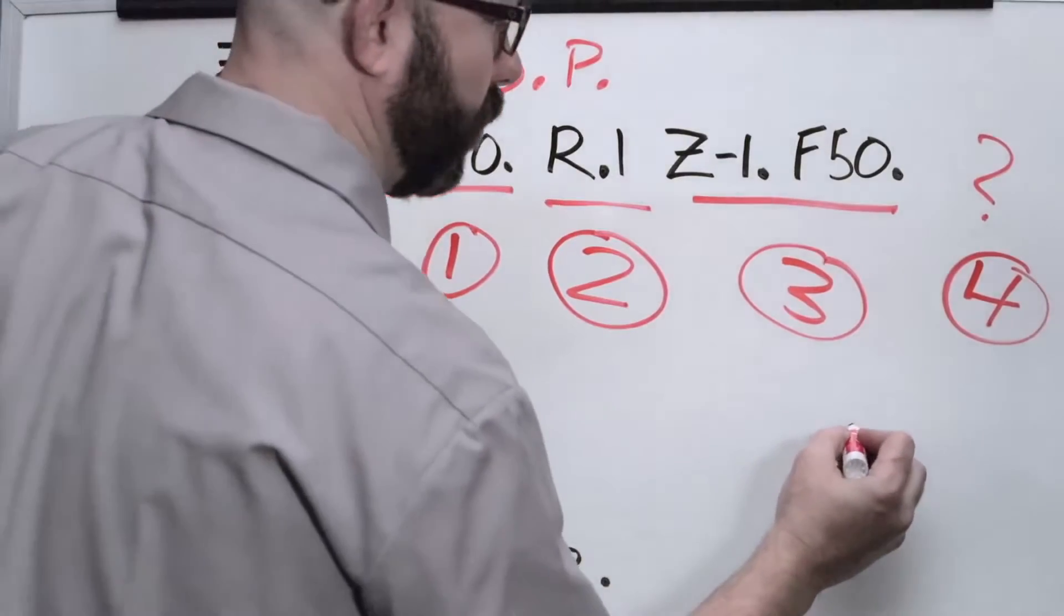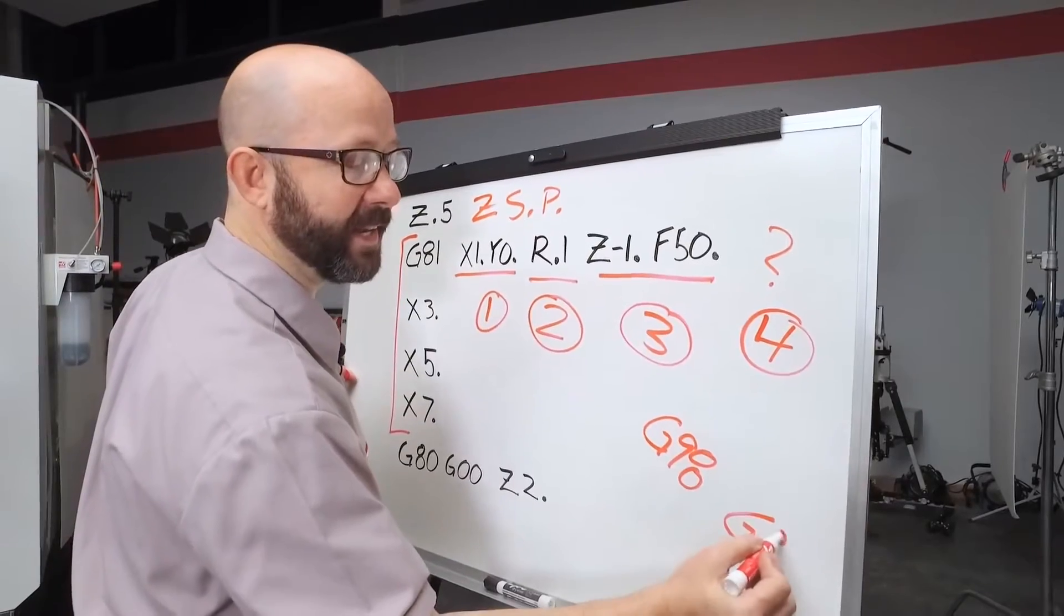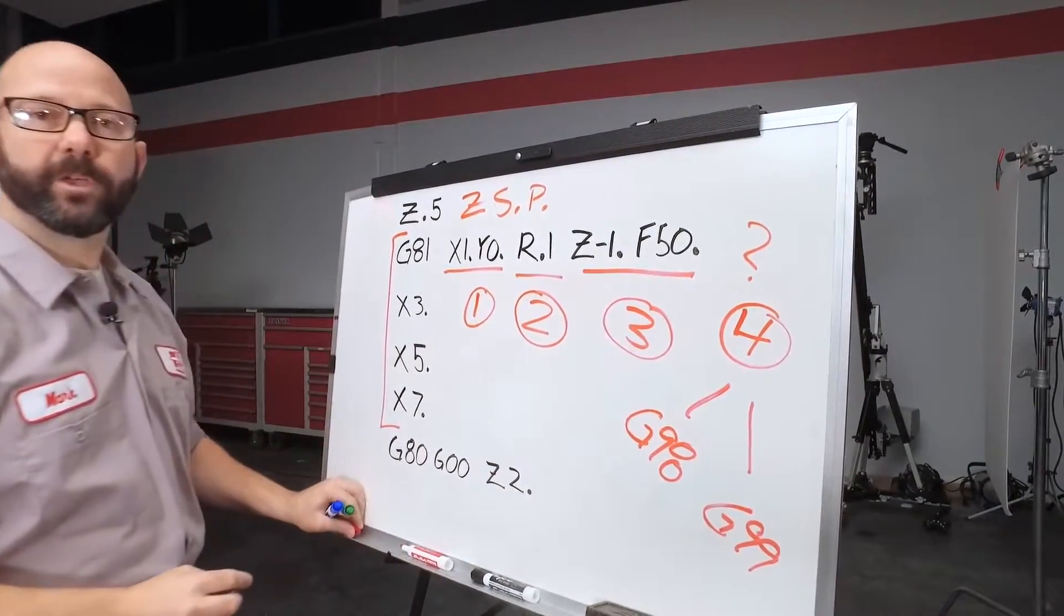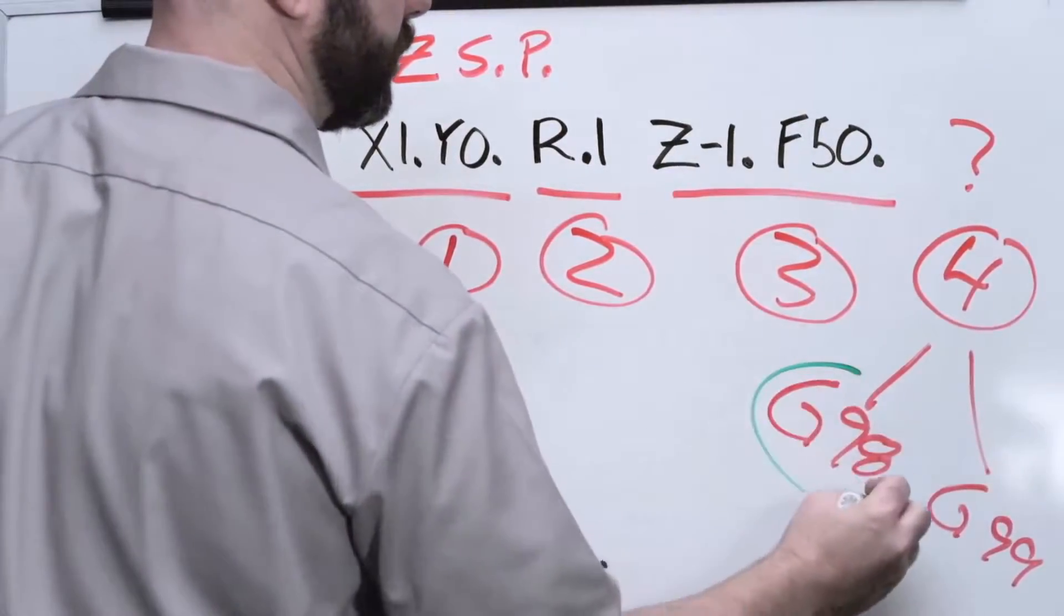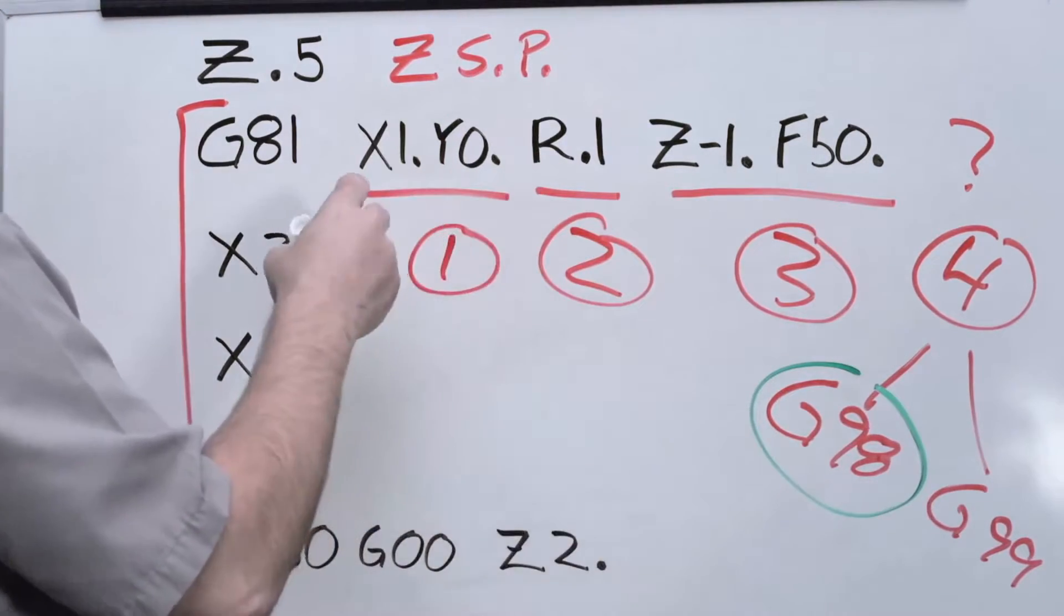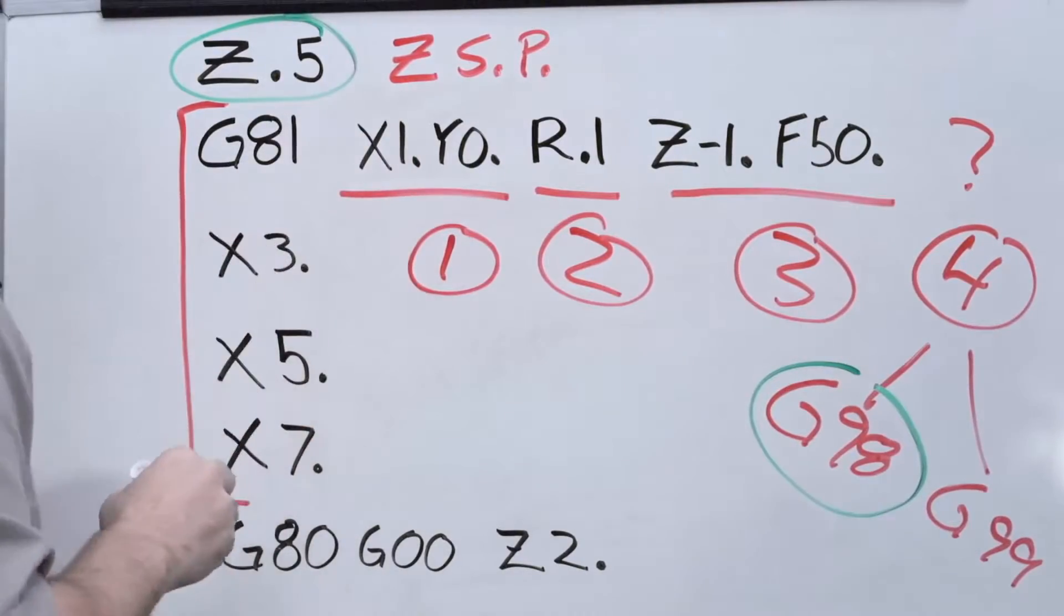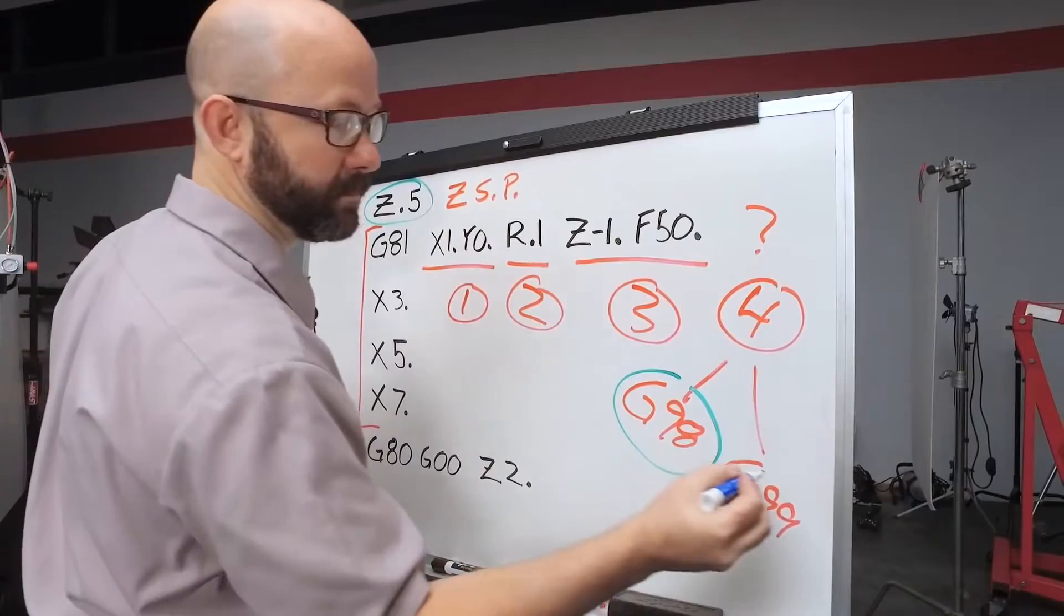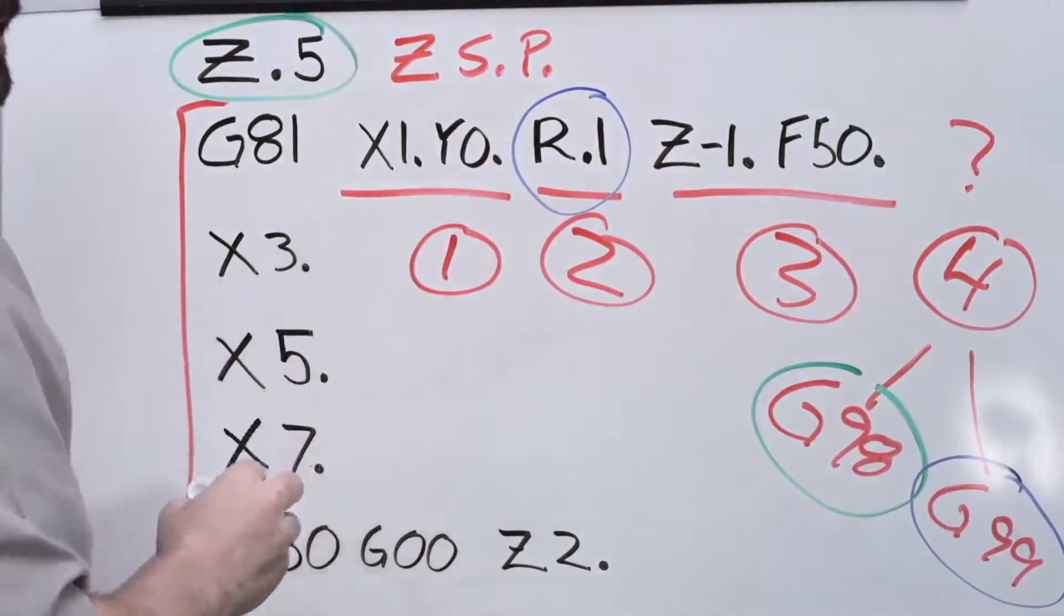But where is this? Well, we have two options. We can either use a G98 or a G99. Now, if we use a G98, the tool, after it's done drilling the hole, is going to rapid back up to that Z starting position that we talked about earlier. If we use a G99, that tool is going to rapid back to our R plane.